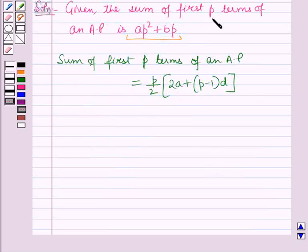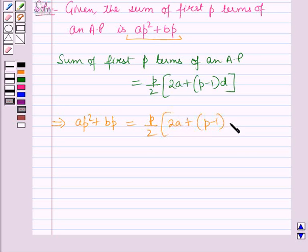Now this is also the sum of first p terms of an AP. So this implies ap² plus bp is equal to p by 2 into 2a plus p minus 1 the whole into d.